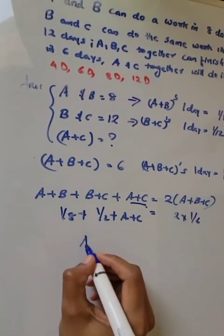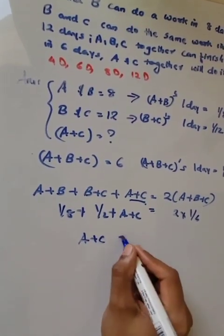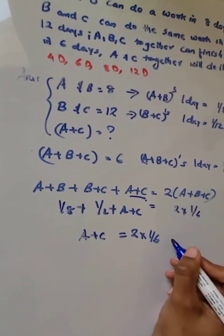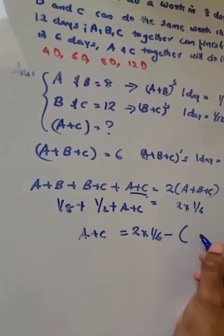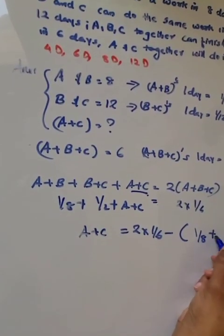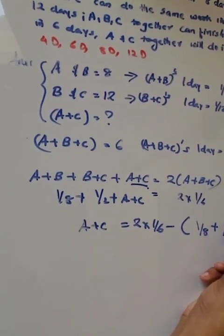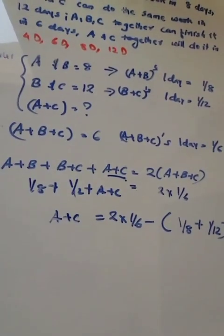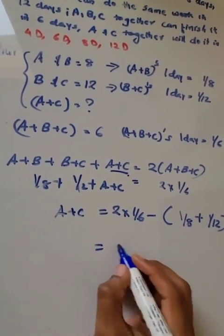From here we have to find out A and C's one day work. That is 2 into 1 by 6 minus 1 by 8 plus 1 by 12. That is equal to 2 into 1 by 6.